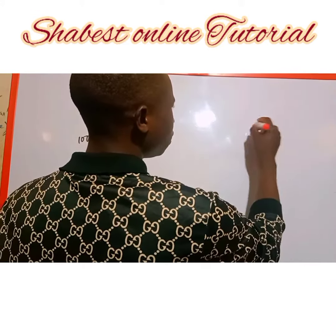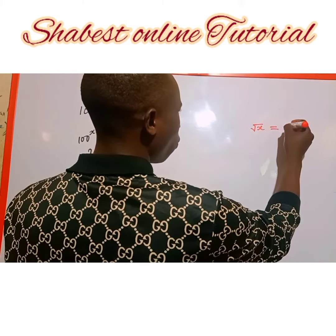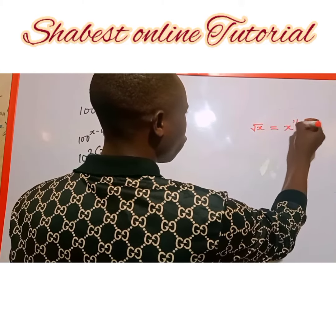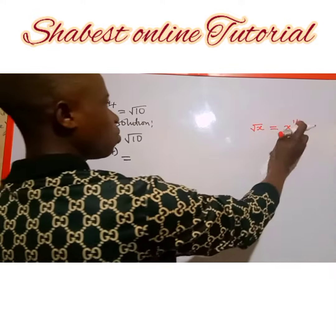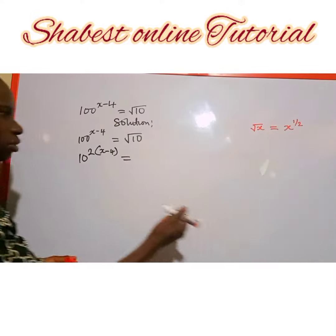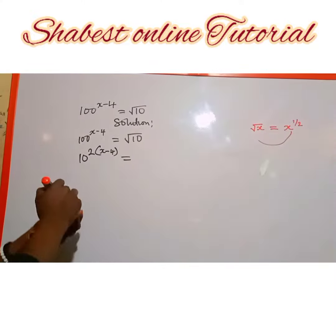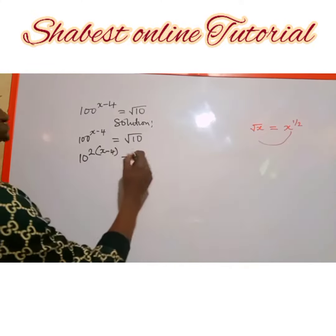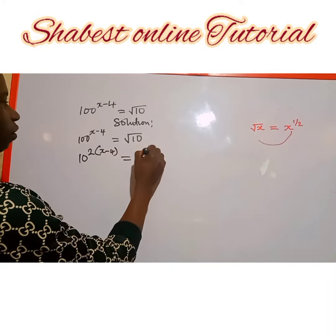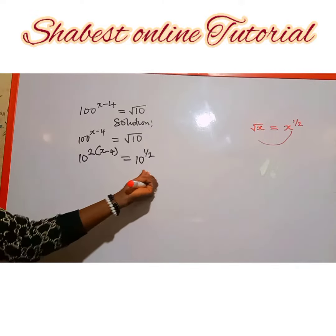Recall: if you have root of a, this can also be written as a to the power of 1 over 2. Root of s can also be written as s to the power of half — it is still the same. So we are going to apply this rule here: root of 10 can also be written as 10 to the power of 1 over 2.